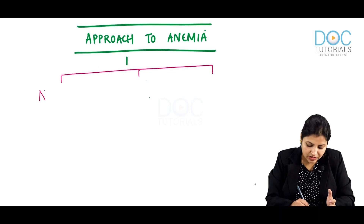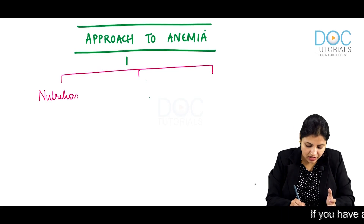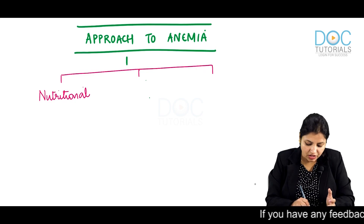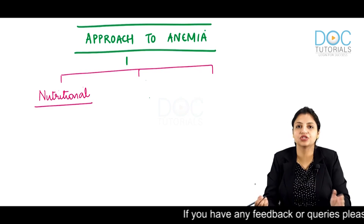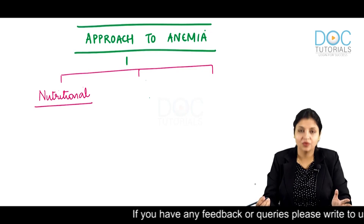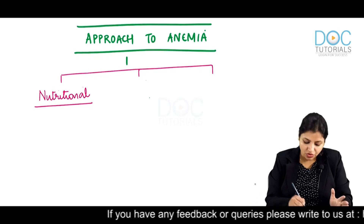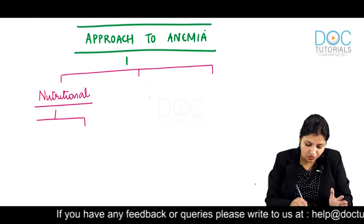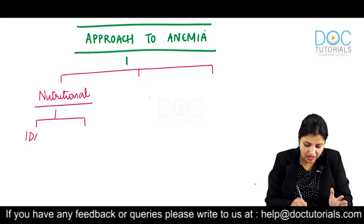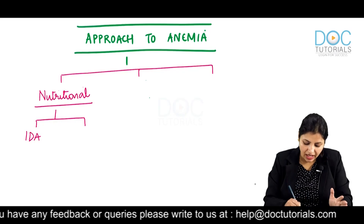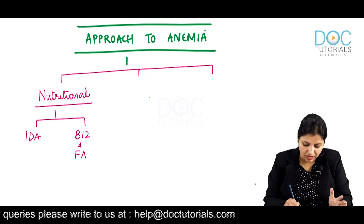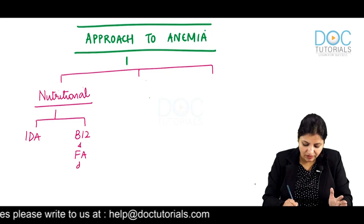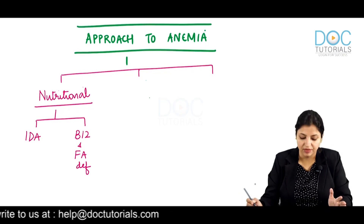The first and most common cause of anemia is nutritional anemias. Nutritional anemias are usually of two types: iron deficiency anemia, and B12 and folic acid deficiency anemia.